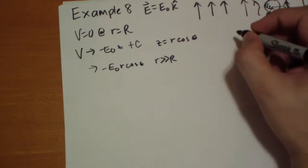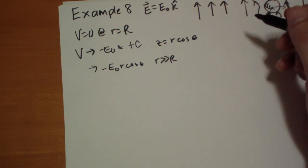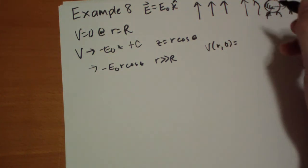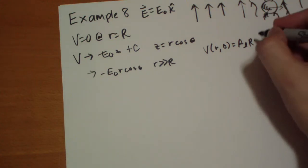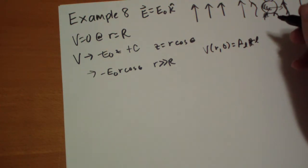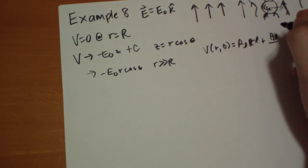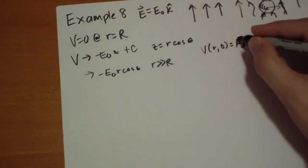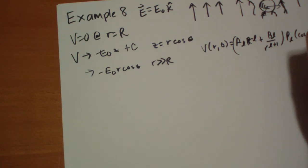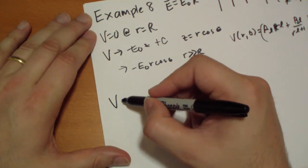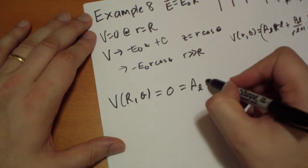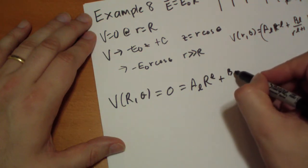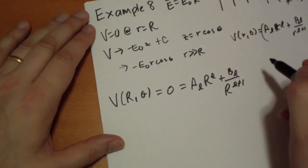So we have to fit. We have V of R, theta is equal to A_L R^L plus B_L over R^(L+1), all of that times P_L cos theta. And to satisfy the first condition, we say V has to be equal to zero. So V of R, whatever theta doesn't matter, has to be equal to zero. That's going to be A_L R^L plus B_L over R^(L+1), it has to equal zero.